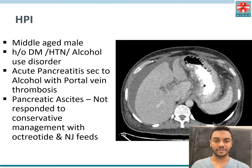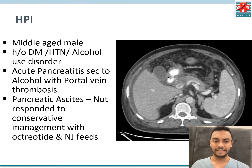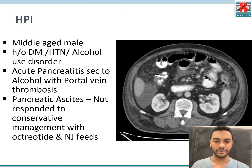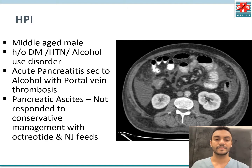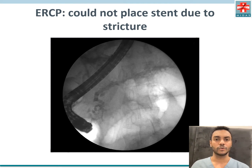Pancreatic ascites was identified but did not respond to conservative management with nasojejunal feeding and octreotide. A CT scan showed presence of ascites in the abdomen. An ERCP was attempted but a stent could not be placed due to angulation and stricture.